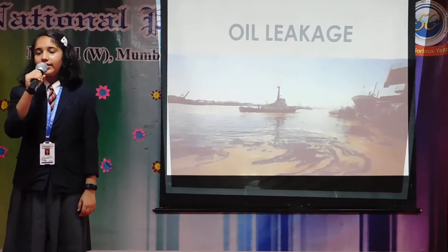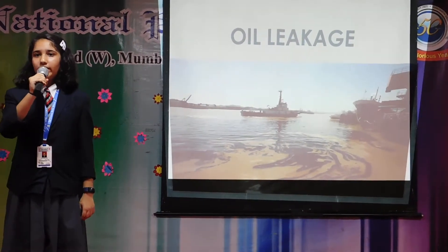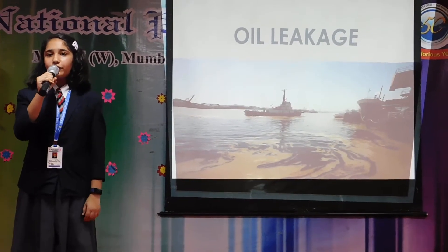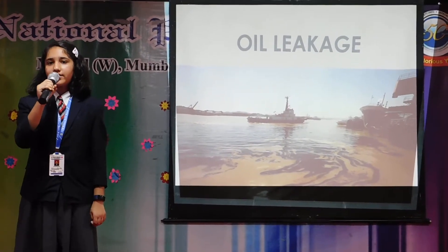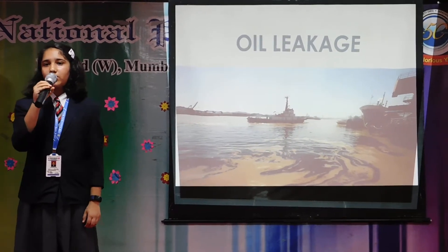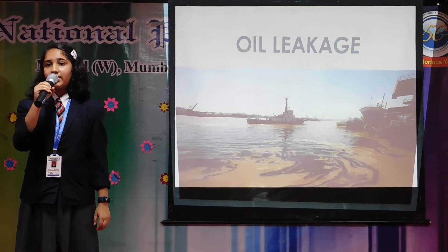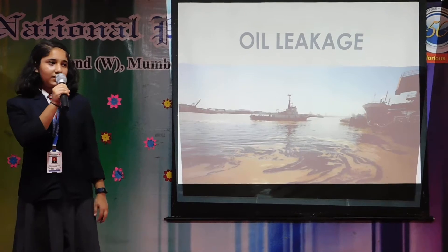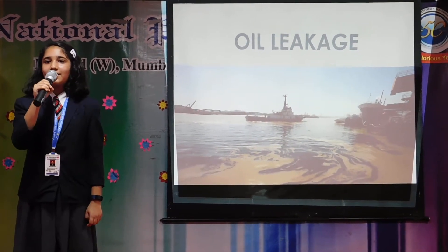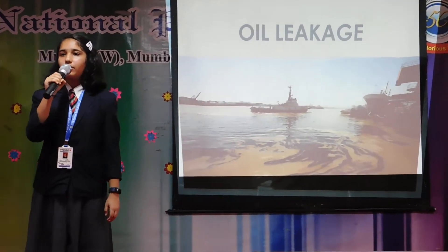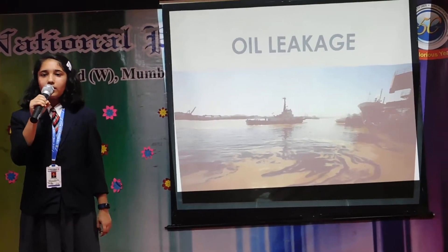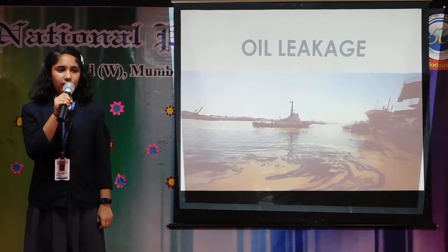When small tankers carrying oil move into rivers and have faults in them, the oil leaks over the surface of the rivers. Since oil and water are immiscible, the oil floats over water as it is less dense. This causes huge destruction to marine life as it prevents sunlight and oxygen from reaching the lower layers of the river, causing pollution.